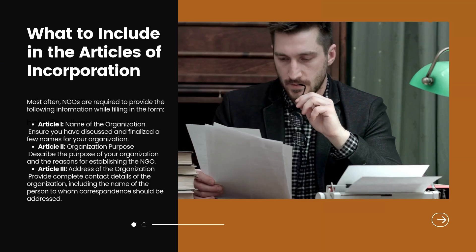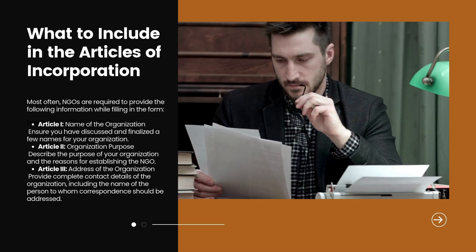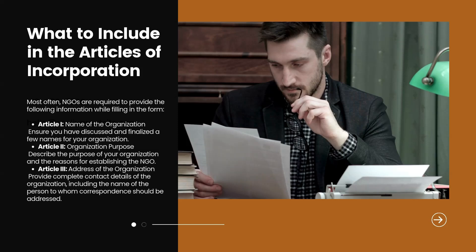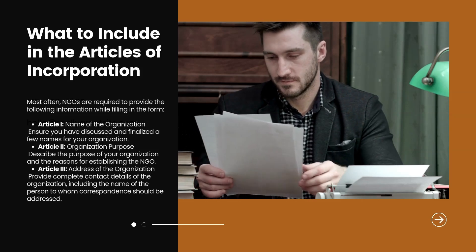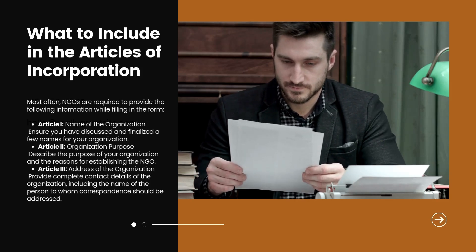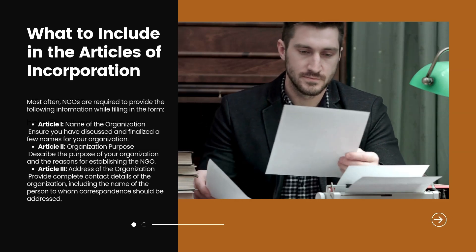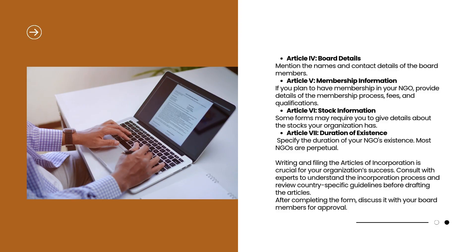What to include in the Articles of Incorporation. Most often, NGOs are required to provide the following information. Article 1: Name of the organization — ensure you have discussed and finalized a few names for your organization. Article 2: Organization purpose — describe the purpose of your organization and the reasons for establishing the NGO. Article 3: Address of the organization — provide complete contact details of the organization, including the name of the person to whom correspondence should be addressed. Article 4: Board details — mention the names and contact details of the board members.